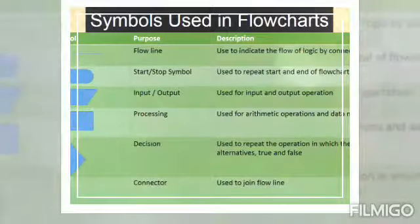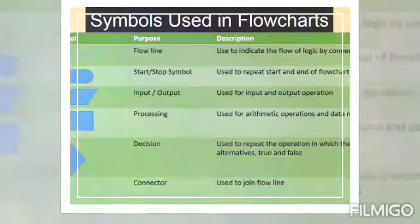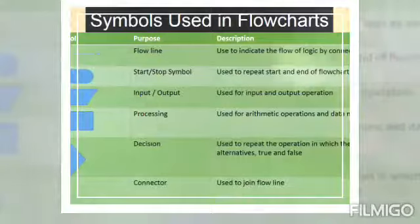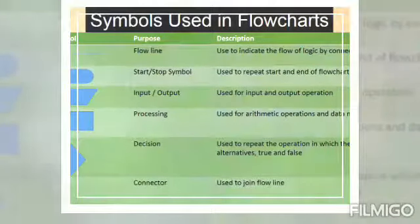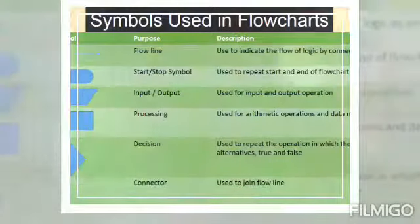A diamond symbol or a decision box is used in which there are two alternative true and false operations. Where we have a condition and according to the condition, the arrow or the flow moves towards the yes or the no direction.